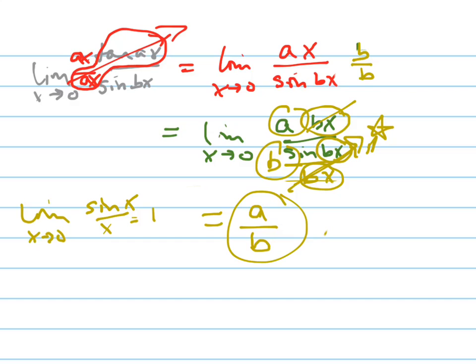That's your answer. So here's the limit as x goes to 0 of tangent ax over sine bx just equals a over b.